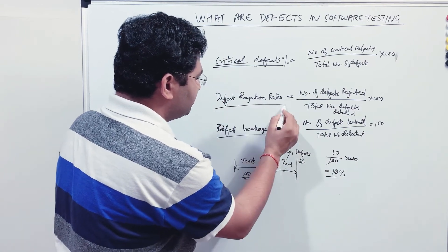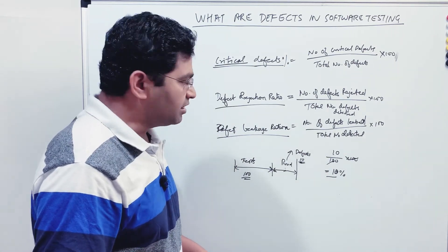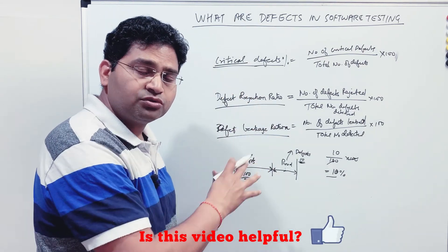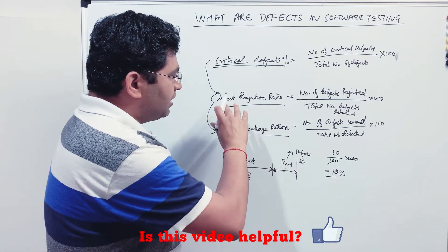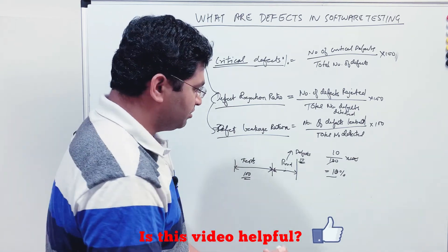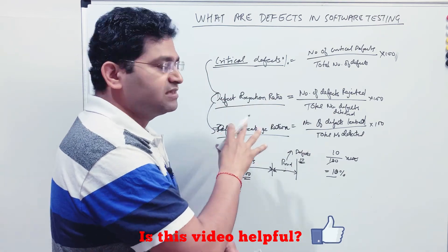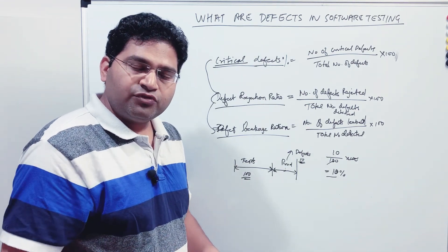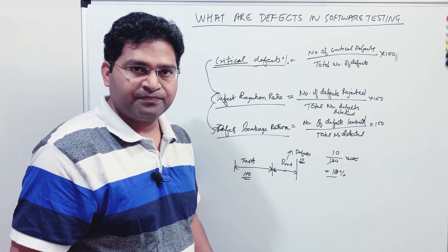Both defect leakage ratio and defect rejection ratio should be as low as possible, as this shows the effectiveness of your testing activities. These are the critical metrics — there are many others you can find by searching online, but defect rejection ratio and defect leakage ratio are very important in terms of test execution. That's all for this tutorial — I hope this gave you a clear understanding of what a defect is and what key defect metrics you can use in your project. Thank you very much for watching.